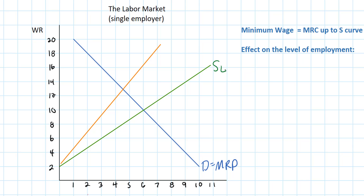The orange line in this graph you should recognize as the marginal resource cost curve. The wage-making firm must raise wages to attract more workers, therefore the cost of hiring additional workers increases faster than the wage that the firm actually has to pay additional workers. Because the marginal resource cost is higher than the wage rate at any level of employment, the monopsonistic employer will choose to employ fewer workers than would be employed in perfect competition.